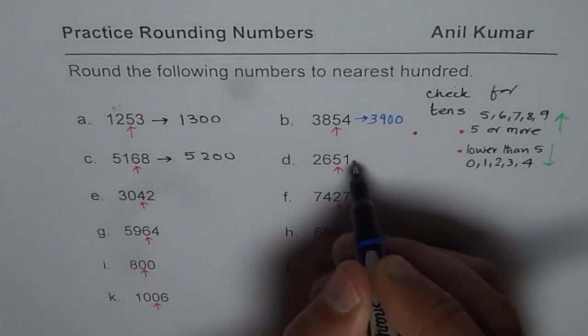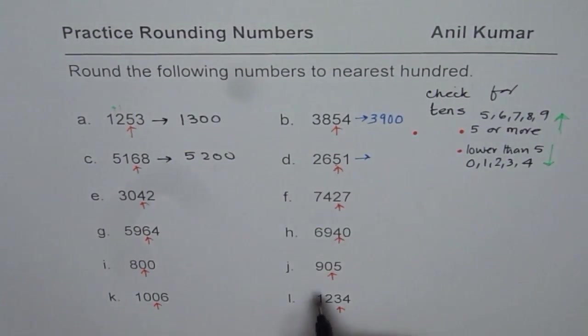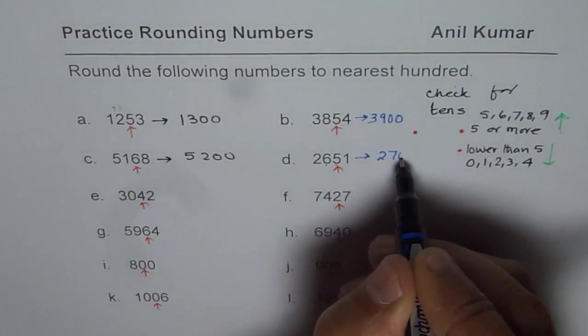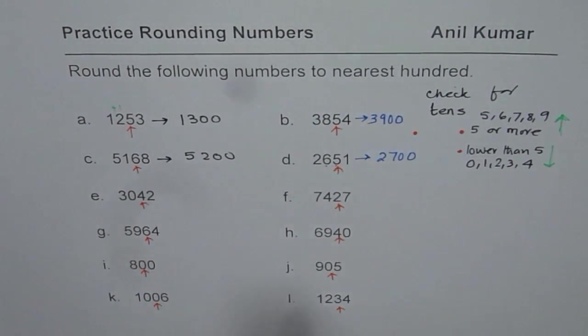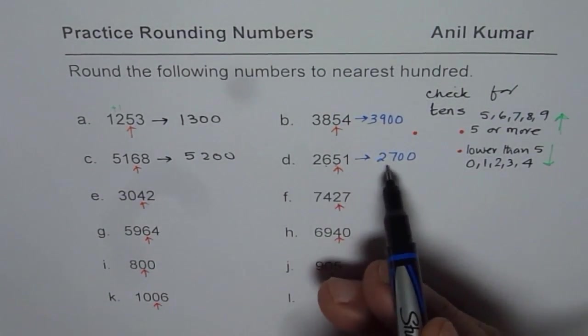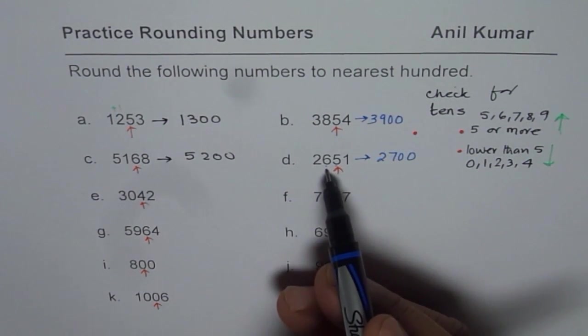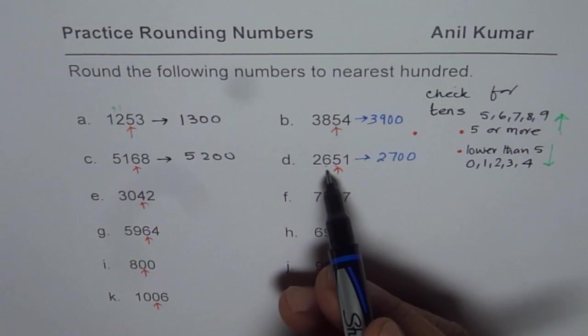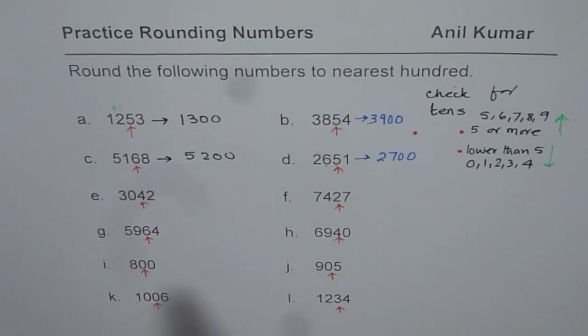Now 2651, 5 again. So this should be higher. It becomes 2700. Do you see that? So numbers on the thousandth place do not change. Only number which changes, increases maybe, the number in the hundreds place and the rest becomes 0. That is what rounding to hundreds is.